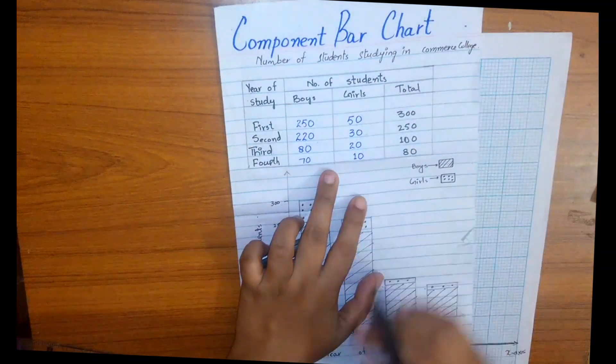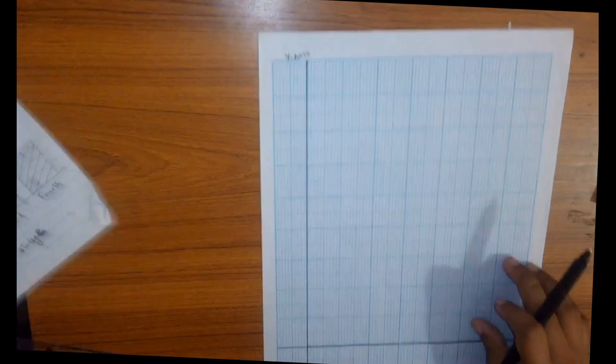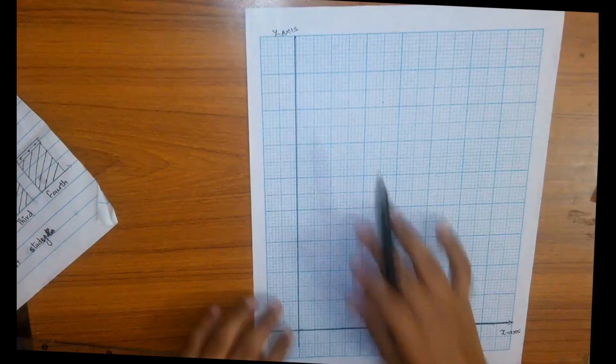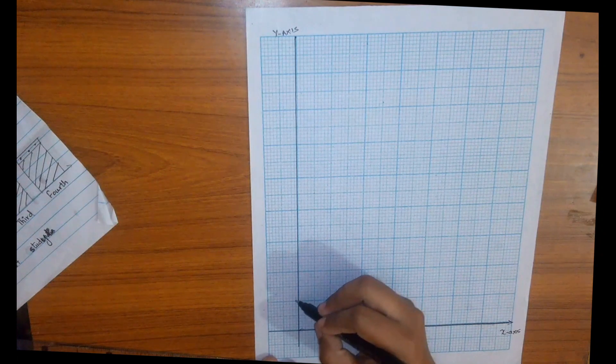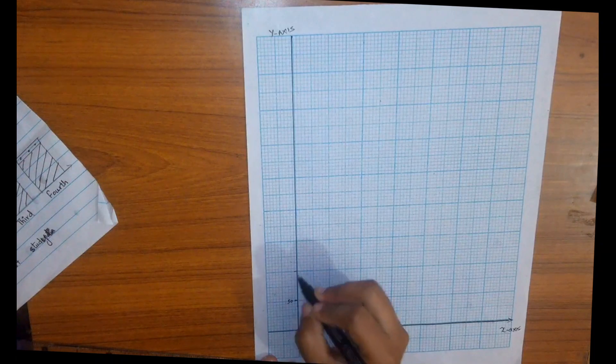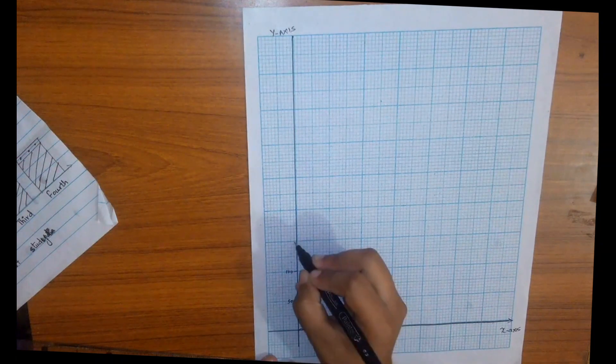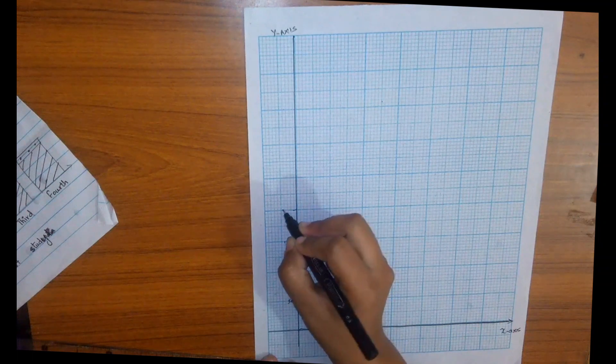Here you can see a lot of small squares, so after every 10 squares let us consider 50 units: 50, 100, 150, 200, 250, and 300.